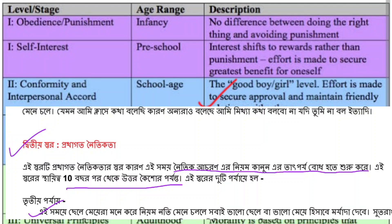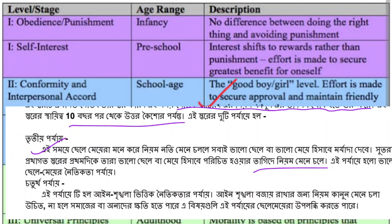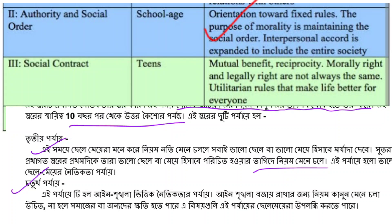Stage 3 is the good girl/good boy orientation. At this stage, moral behavior is guided by seeking approval from others. Stage 4 is the law and order orientation. At this stage, morality is based on following societal rules, laws, and maintaining social order. People at this stage believe that rules and laws must be followed strictly.